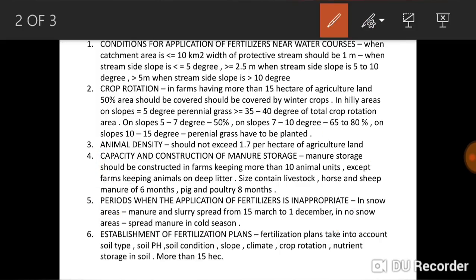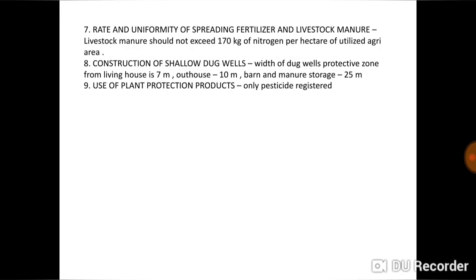The sixth rule is the establishment of fertilization plans. Fertilization plans involve planning related to the soil — its pH, quality, nutrients, and soil type (black soil, red soil, loamy soil, clay soil). Fertilization plans are required only for agricultural land that is more than 15 hectares; they are not required for smaller plots.